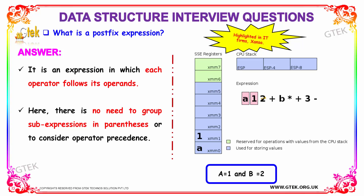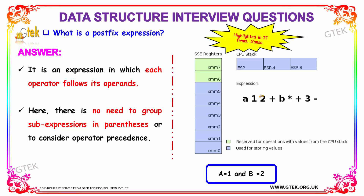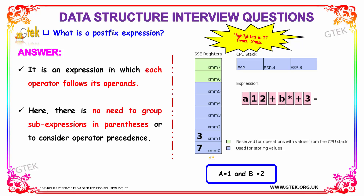Our next question is: what is a postfix expression? It is an expression in which each operator follows its operands. There is no need to group expressions in parentheses or consider operator precedence; you just process each operator and operand in order. For example: a = 1, then 2, and a plus operator, so add 1 and 2 to get 3. Then B — its value is 2 — gives 6; plus a gives 7. Then 7 and 3 with a minus gives the final answer of 4. These kinds of questions are highlighted in IT firms like Sansa.